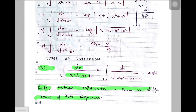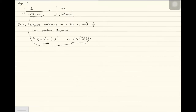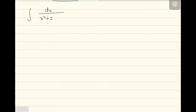Type 1 has the quadratic in the denominator or a quadratic with the root. Note that a should not be equal to 0, because if a becomes 0 then it will no longer be a quadratic. The rule is to express ax squared plus bx plus c as the sum or difference of two perfect squares. Let us try an example — integration dx divided by x squared plus 2x plus 5.